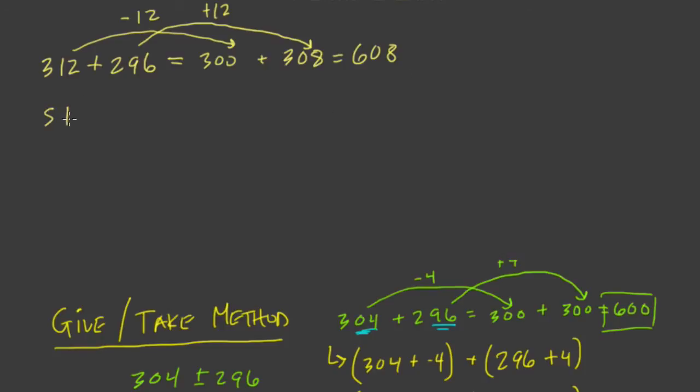This works with bigger numbers as well. 5,125 plus, let's say, 4,800. Well, there are different ways we can do it. But what I'm going to do is I'm going to use the 4,800 as a reference. I have to add 200 to get 5,000. And here I have to take away 200 to balance that out.